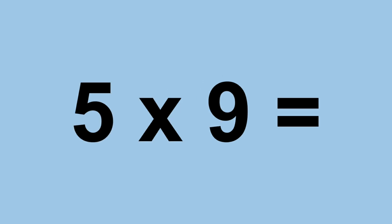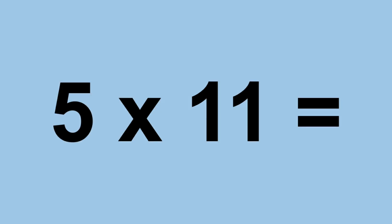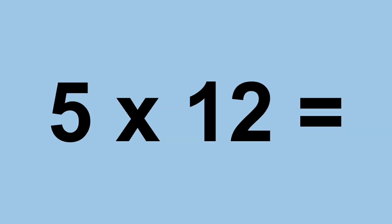Five times nine equals forty-five. Five times ten equals fifty. Five times eleven equals fifty-five. Five times twelve equals sixty.